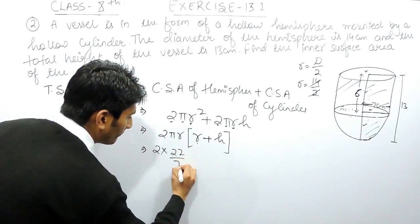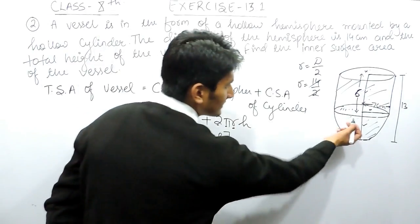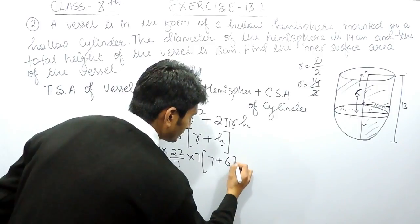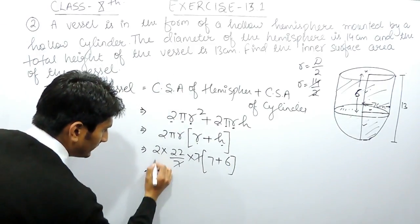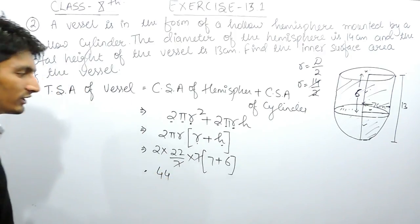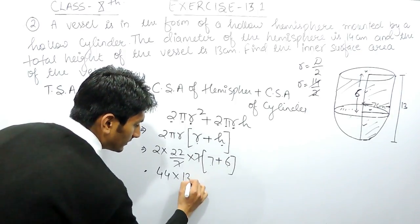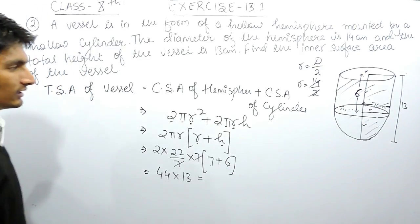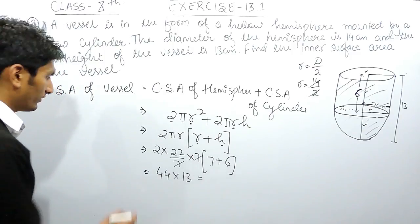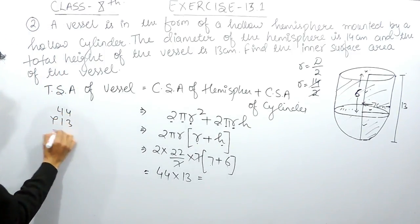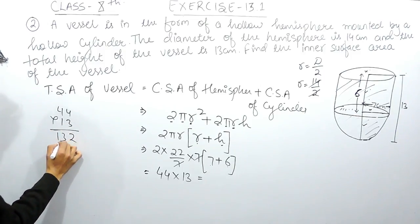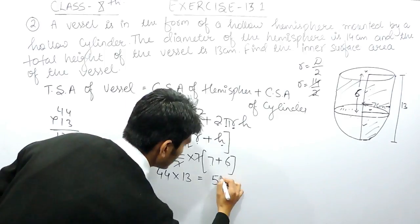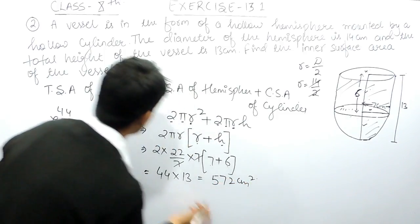Substituting: π = 22/7, radius = 7 cm, height = 6 cm. So we get 2 × (22/7) × 7 × (7 + 6). The 7s cancel, giving 2 × 22 × 13 = 44 × 13 = 572. So the total surface area of the vessel is 572 cm².